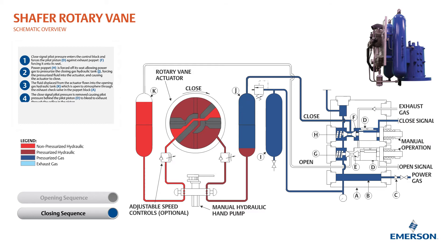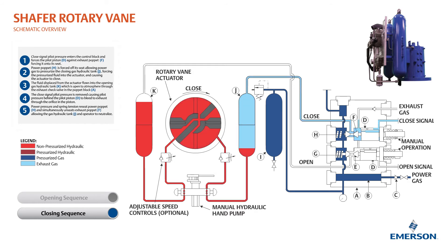The closed signal pilot pressure is removed, causing pilot pressure behind the pilot piston to bleed to exhaust through the orifice in the piston. Power pressure and spring tension reseat the power poppet and simultaneously unseat the exhaust poppet, allowing the gas hydraulic tank and operator to neutralize.